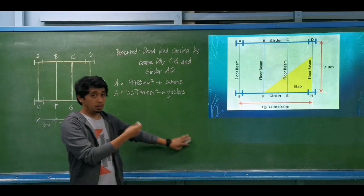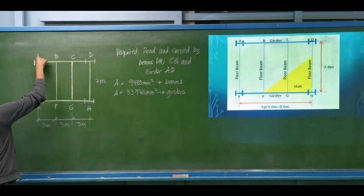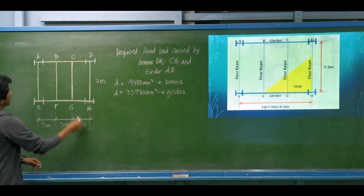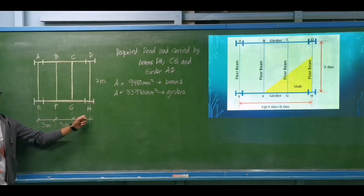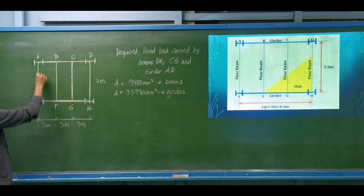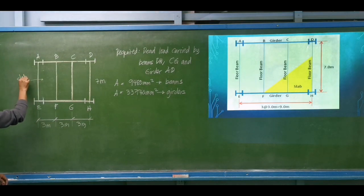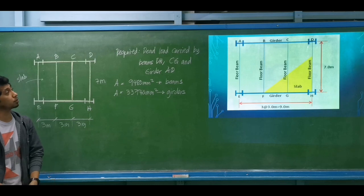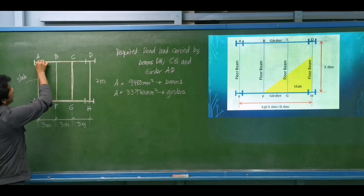This next example is a complete floor system. From the given floor system, we have columns at A, D, E, and H. Columns A and D are connected by a girder, and columns E and H are connected by a girder. Over those girders, we have beams AE, BF, CG, and DH. The slab is concrete and we are using steel beams and steel girders. We are required to compute the dead load carried by beam DH, beam CG, and girder AD.